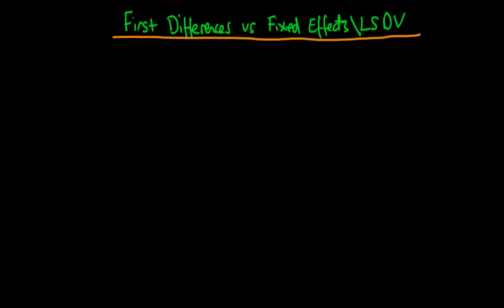In this video we're going to continue our discussion of the differences between first differences estimators and fixed effects estimators, which are equivalent to least squares dummy variables estimators. We're talking about the circumstance where the number of time periods is greater than or equal to 3, because if the number of time periods is 2, the two different types of estimators are actually equivalent.